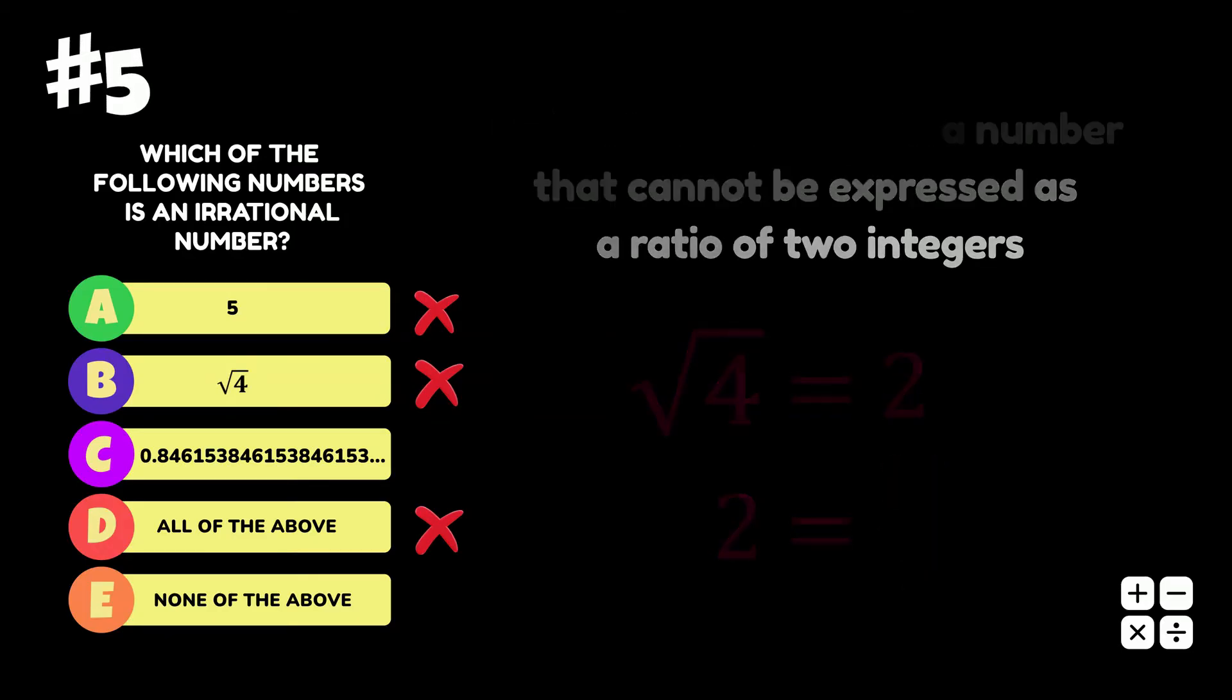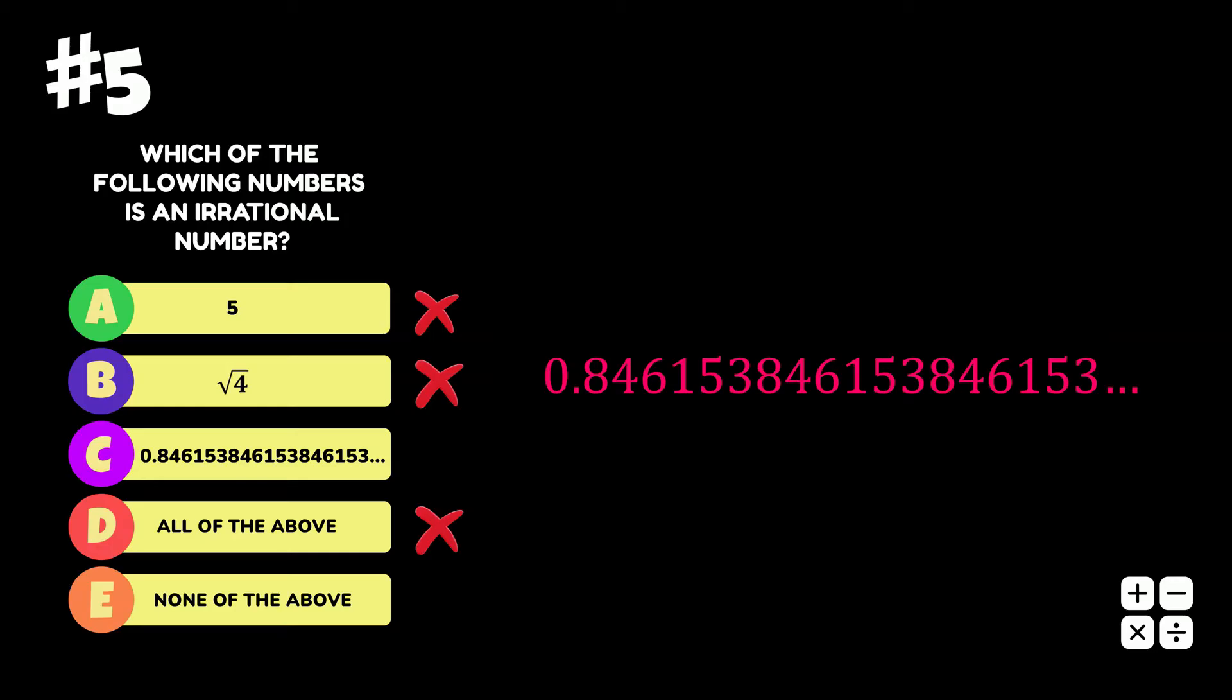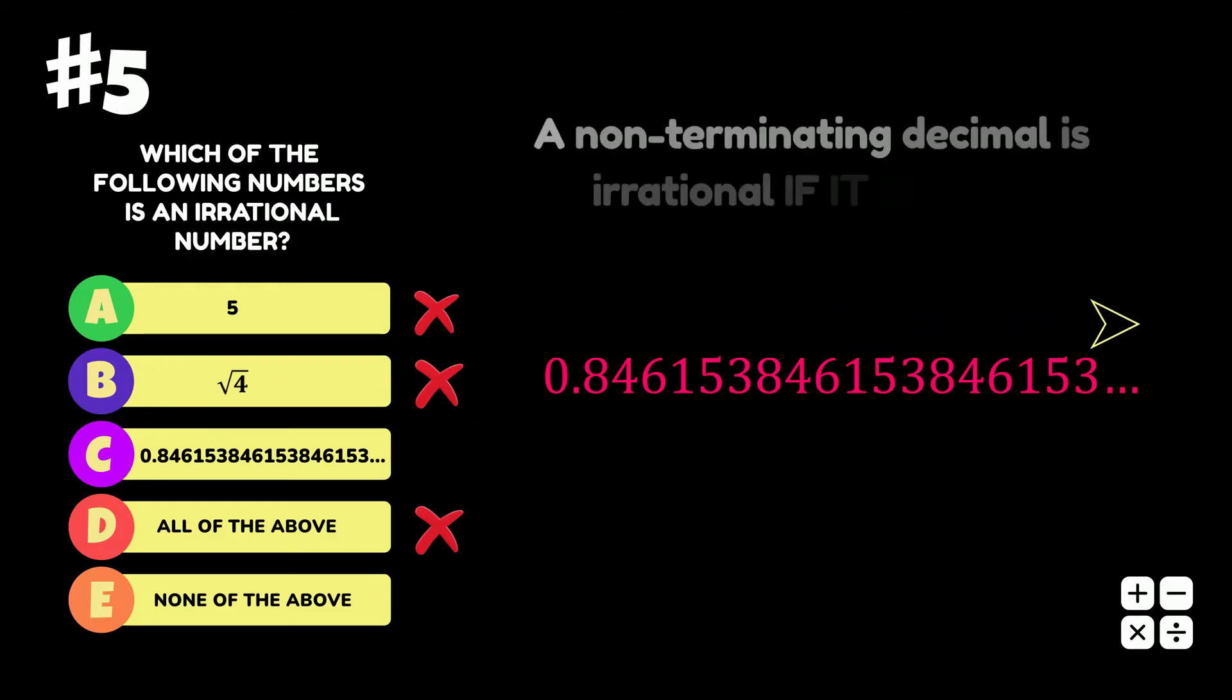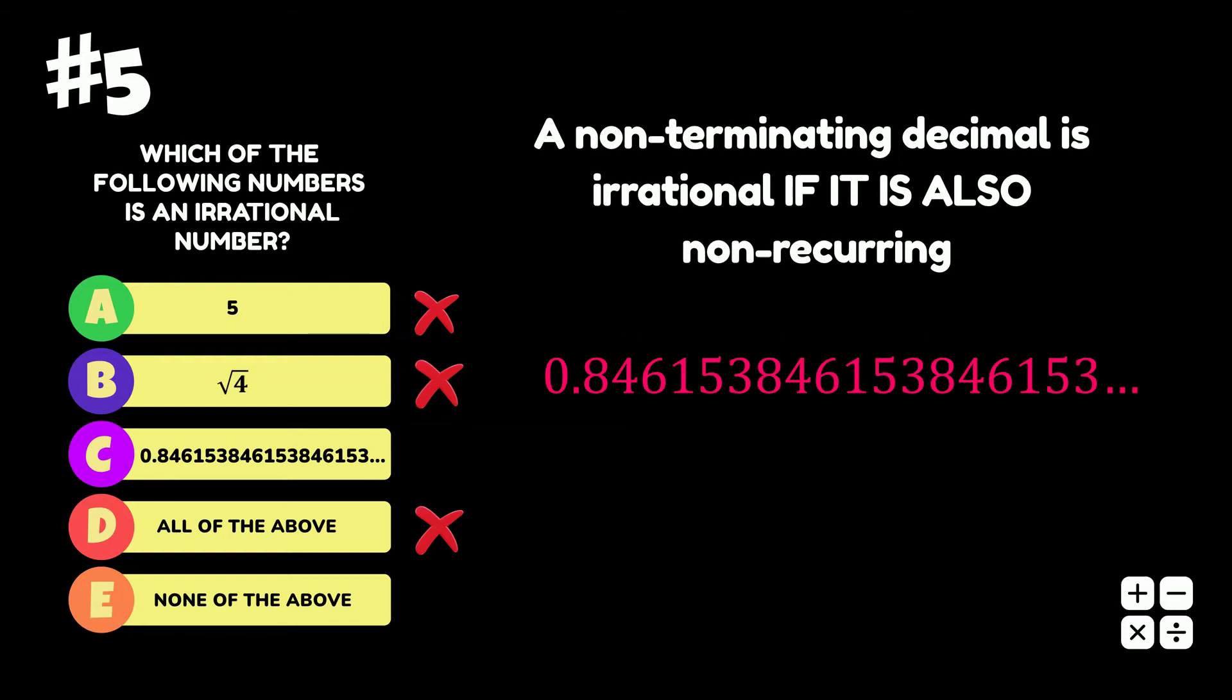The option C number is a non-terminating decimal, that is, it has digits on the right-hand side of the decimal point that continue forever. A non-terminating decimal is irrational if it is also non-recurring, that is, if on the right-hand side of the decimal point there is no digit or no sequence of digits that repeats forever.